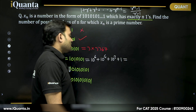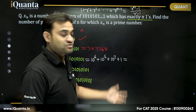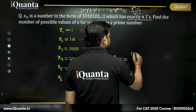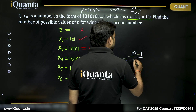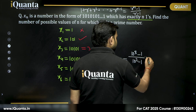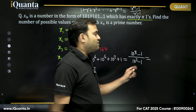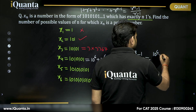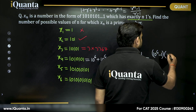In this case, the common ratio is 10^2. So this expression becomes (10^8 - 1) divided by (10^2 - 1). Now, 10^8 - 1 can be written as (10^4 - 1) times (10^4 + 1).